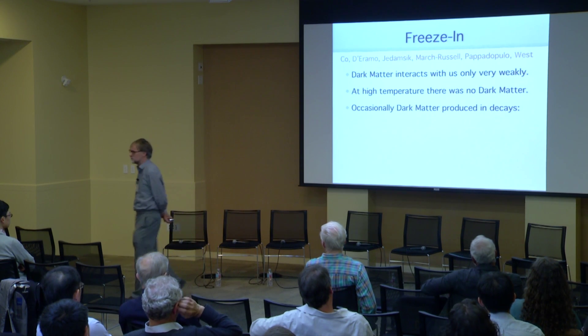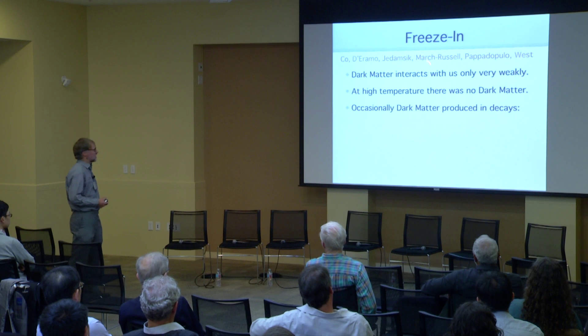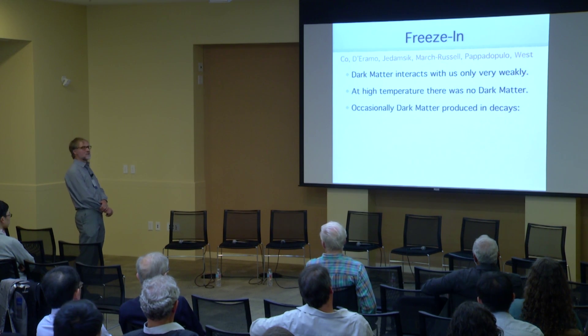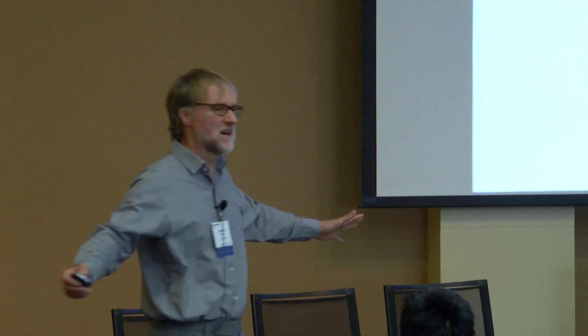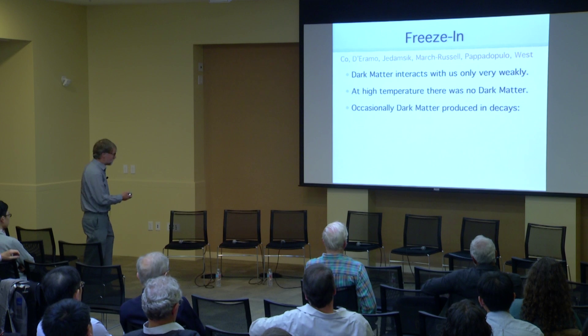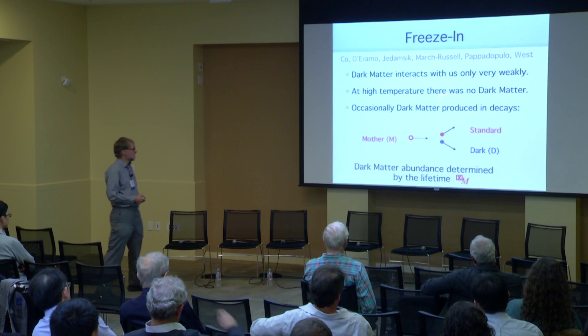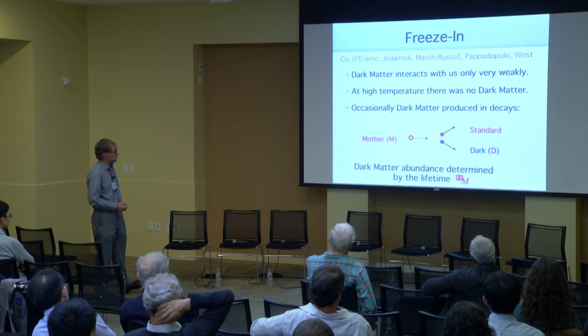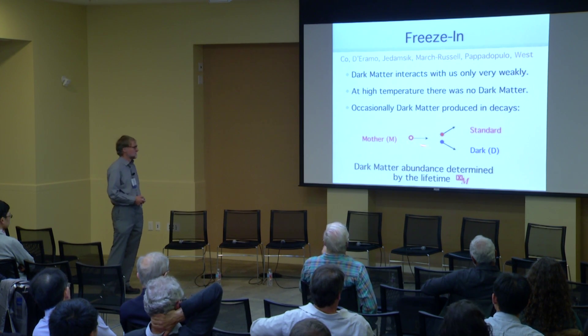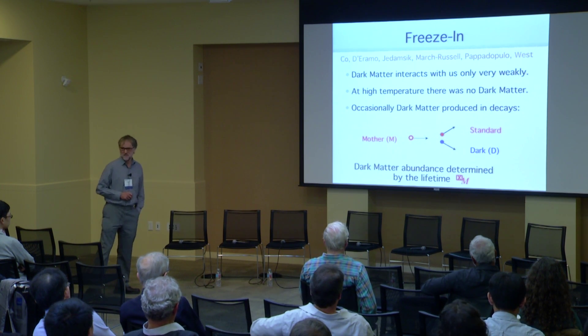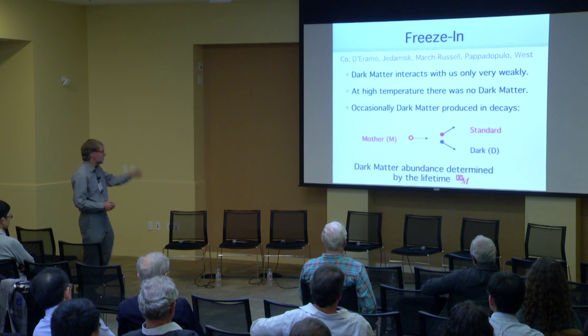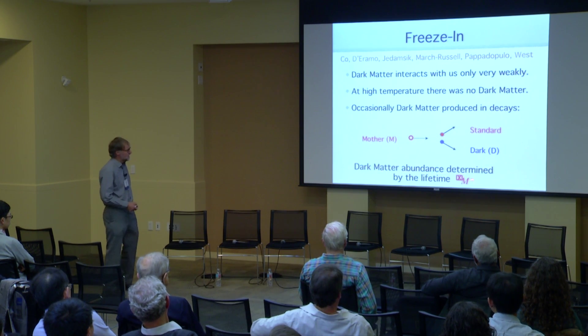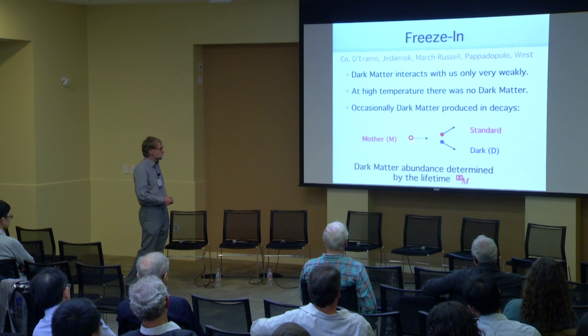So let me go on to freeze-in. Freeze-in is exactly the opposite of what I've described for freeze out. In freeze-in, the dark matter particles interact with standard model particles only very weakly. At high temperature, there was no dark matter particles around. There was just no dark matter at all because there's been no time for them to be produced by collisions of standard model particles. However, occasionally dark matter particles are produced, and they're produced because there's two new particles. Not only is there a dark matter particle, but there's a mother particle that I call M. And the dark matter particle comes from the decay of a mother particle. There could be hundreds of models for this, the same as the hundred models for freeze out, but I want to give you the generic mechanism. So the dark matter abundance is determined by the lifetime of this mother particle decaying.